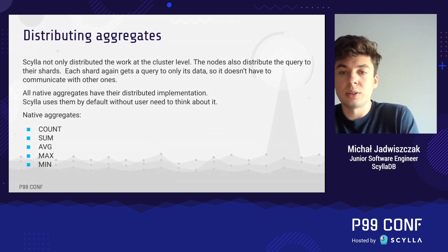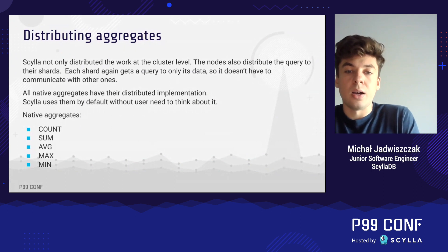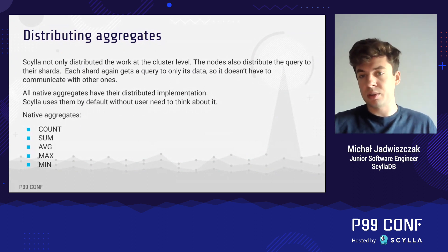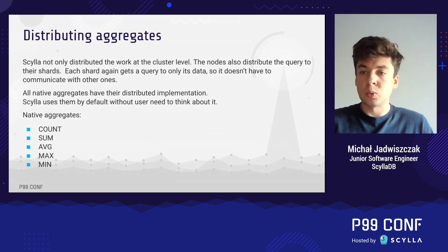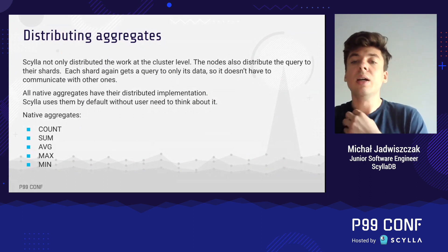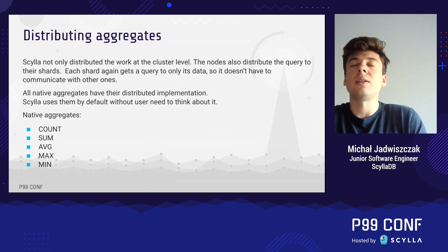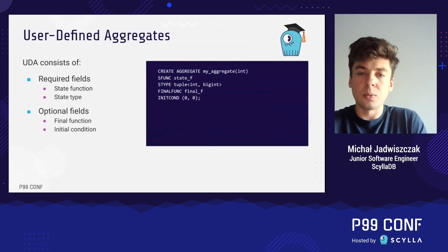Scylla also supports several native aggregation functions. All of them are distributed, so users will observe a noticeable improvement without needing to think about distributing them. The distribution of native aggregates is implemented by swapping the underlying function with its reducible counterpart, so the internal query returns a partial result instead of the final one.